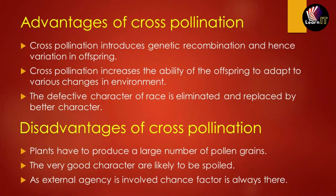The advantages of cross-pollination are: it helps introduce genetic recombination and hence variation in offspring, introducing different types of genes from different species to produce new varieties. Cross-pollination also increases the ability of offspring to adapt to different kinds of changes due to genetic recombination. Defective characters of the race are eliminated and replaced by better characters.